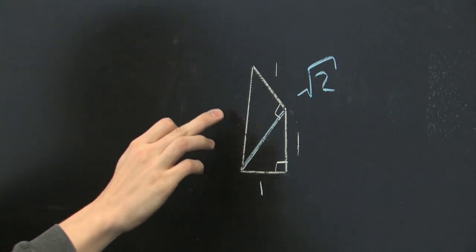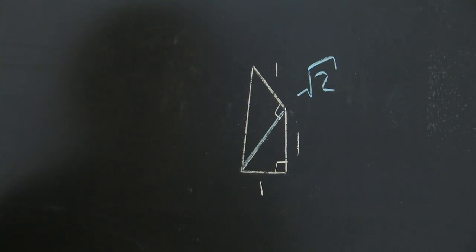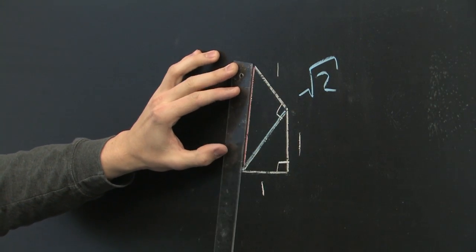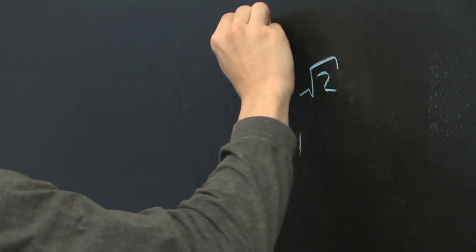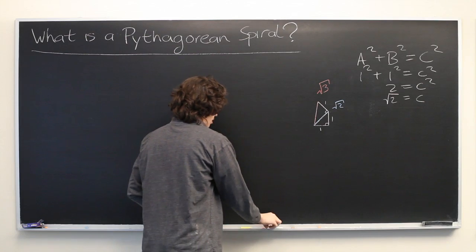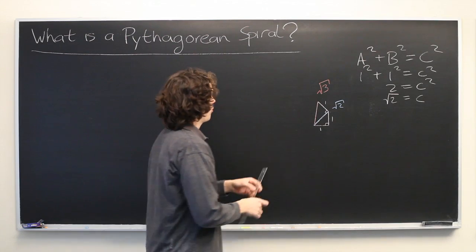And you can very easily compute the length of this hypotenuse by again employing the Pythagorean formula. You can quickly find that it is of length root three. And then we just repeat the process over and over again.